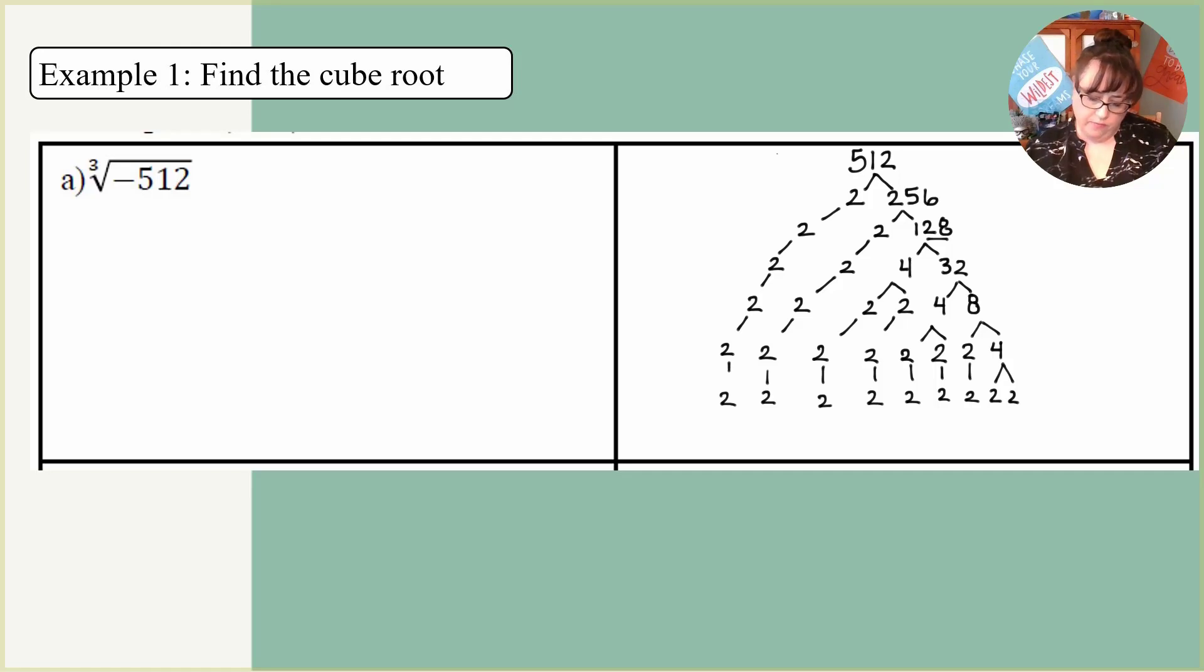So now I need to count up how many 2s I have. I'm going to switch to a different color real fast just so I can count. I have 1, 2, 3, 4, 5, 6, 7, 8, 9 twos. So 9 of them. 1, 2, 3, 4, 5, 6, 7, 8, and 9. And now I have to make sure I do the cube root of them.